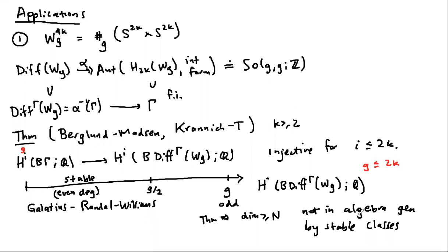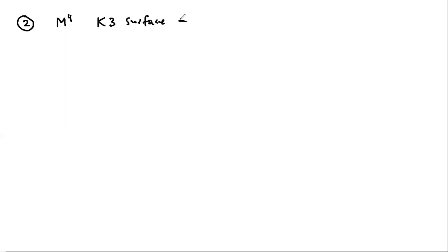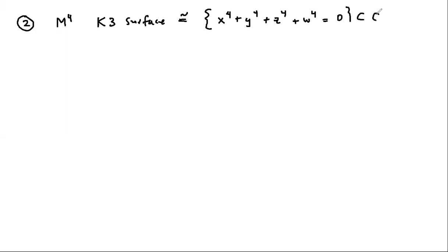That's the first application. The second application: take M to be a four-manifold which is a K3 surface. As a smooth manifold, all K3 surfaces are diffeomorphic to one another. One example is to take a smooth quadric in CP^3.